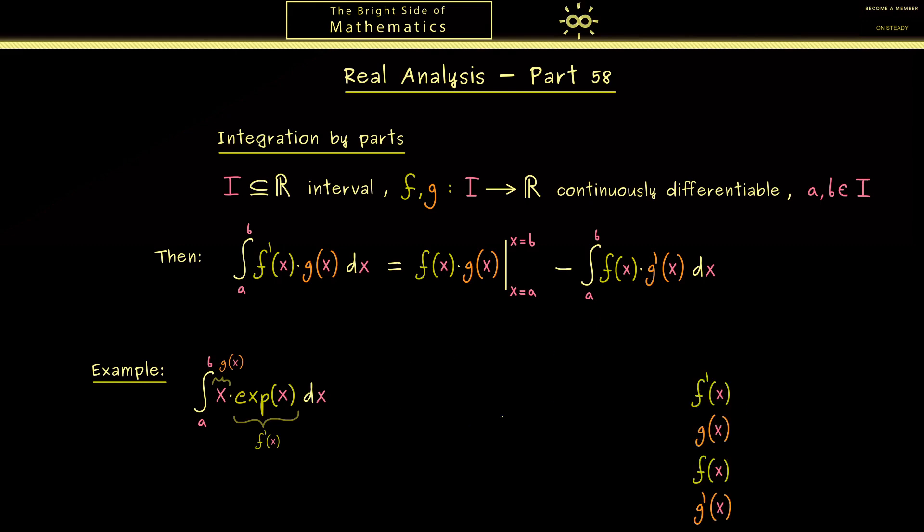This means the integral in the end will be simpler. I would always suggest to write down all four functions that are involved here. We already know the first two, f' and g, are fixed by the integral. Then we have to know an antiderivative, which for the exponential function is very simple—it's just the exponential function again. Then the next function g' is just the derivative of x, which is 1.